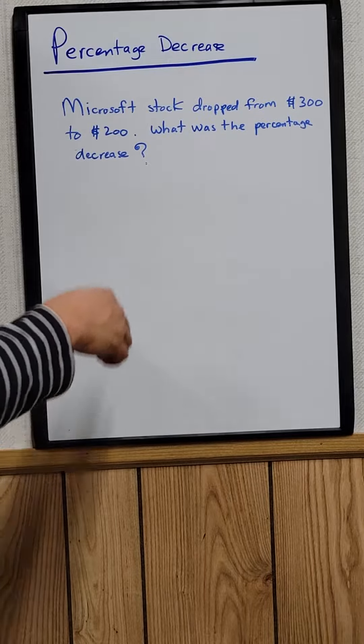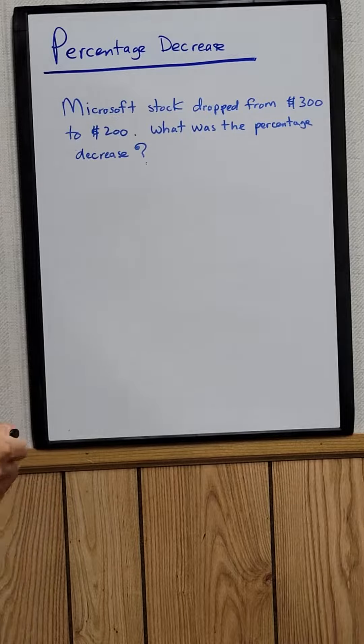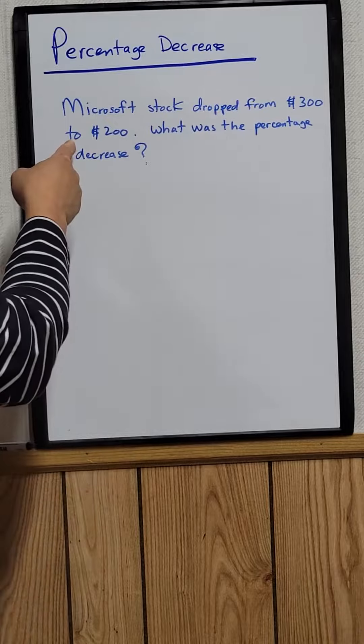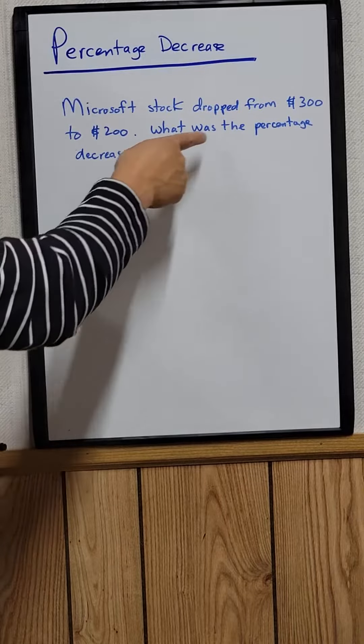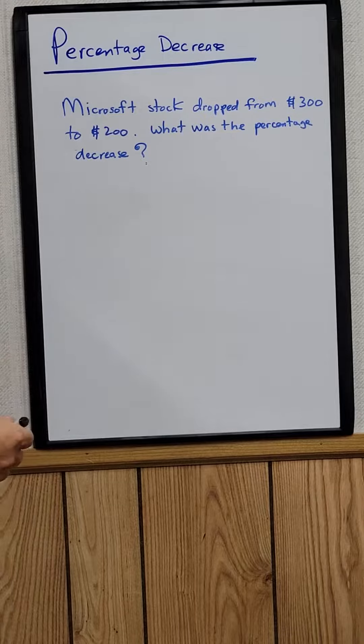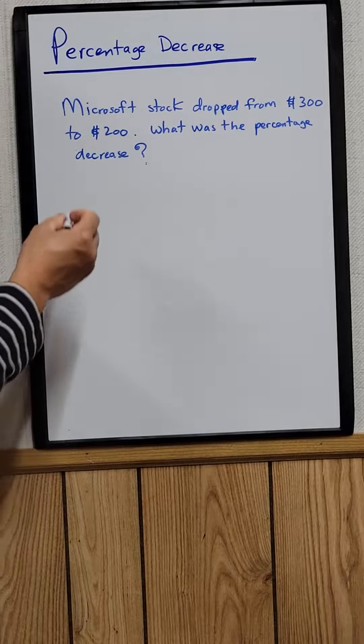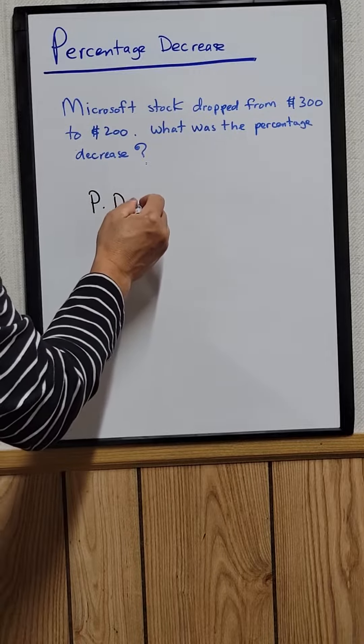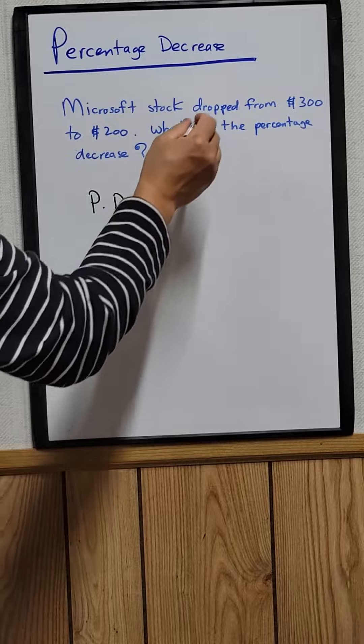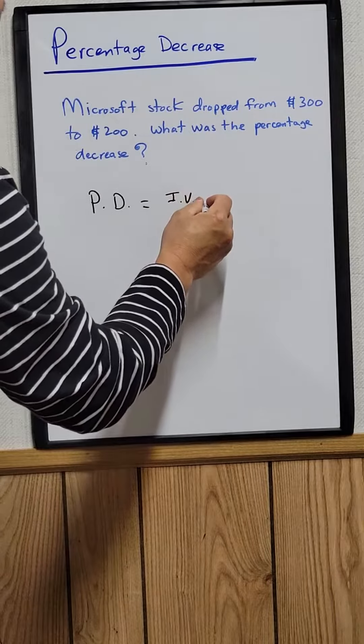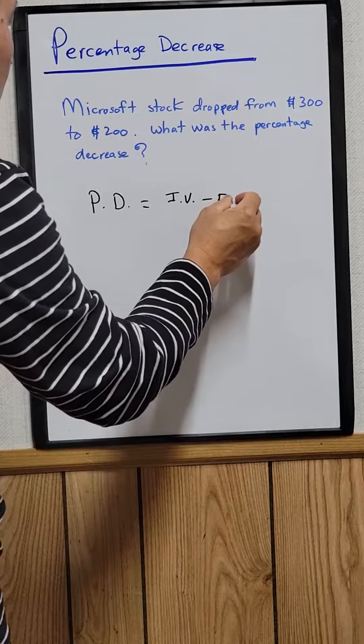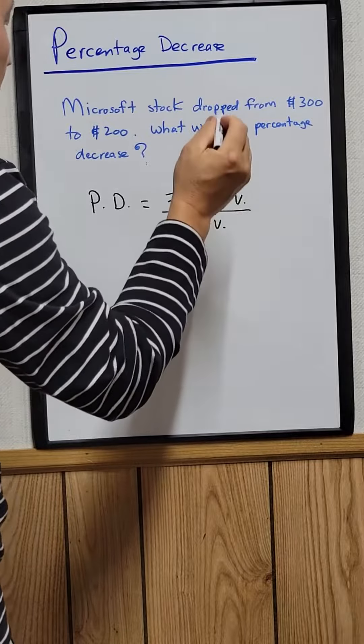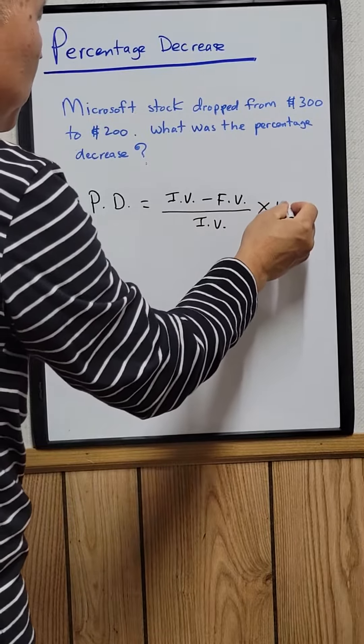Let's try to solve a percentage decrease problem. For example, Microsoft stock dropped from $300 to $200. What was the percentage decrease? So to find the percentage decrease, let's abbreviate PD as percentage decrease. It's equal to the initial value IV minus the final value FV, and then divided by the initial value times 100, since we're trying to find the answer in percent.